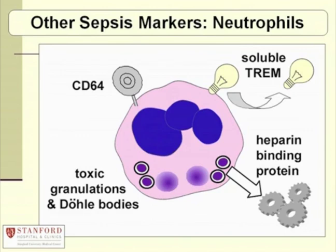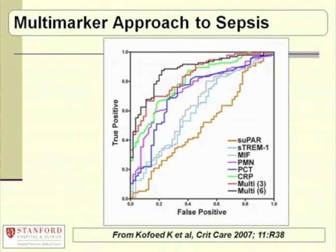There are other markers in the chemistry realm, like soluble TREM — a marker of activation that is lost from the cell surface and can be measured in plasma — and heparin-binding protein. The probable eventual way to really nail down the ability to predict risk of severe sepsis is going to be a multi-marker approach, as shown in this demonstration project, where using either three or six markers — regardless of what they are — is better than using any one marker alone.